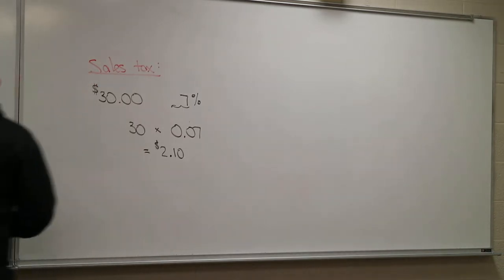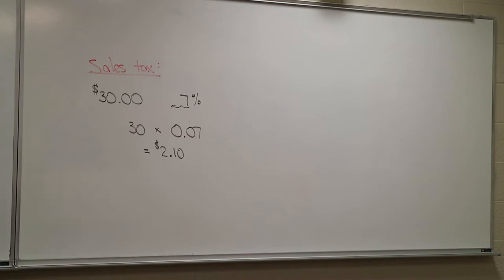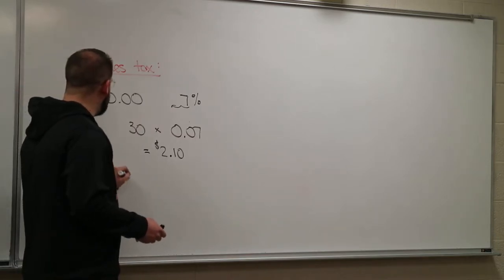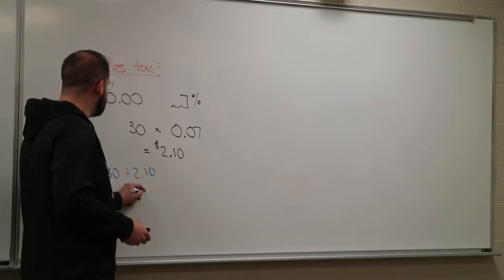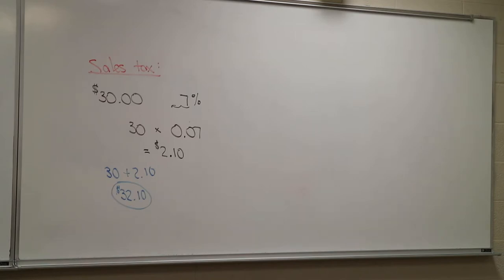For sales tax, unlike discounts, you don't subtract — you add. Take $30 and multiply by 0.07 — that's $2.10. So $30 plus $2.10 equals $32.10 total. Now, if minimum wage is about $8 an hour, $32.10 divided by $8 means it would take you about four hours of work to buy that video game.